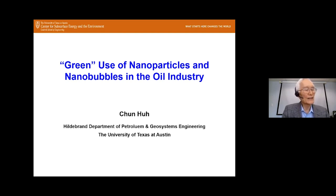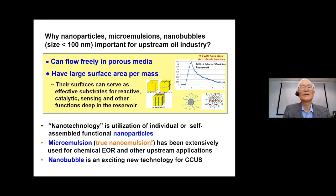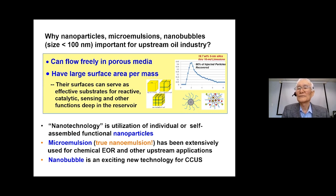One technology area where the upstream oil industry can pay more attention to reduce petroleum's footprint is the use of nanodispersions — nanoparticles, nanoemulsions, or nanobubbles whose size is smaller than 100 nanometers. Nanodispersions are important because they can flow freely in porous media. For example, 5-nanometer silica nanoparticles at a concentration of almost 28% can flow freely through very tight 10-millidarcy limestone, recovering almost 96% of the injected particles.